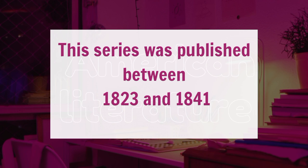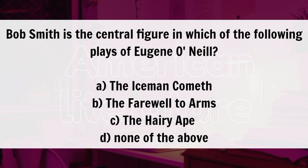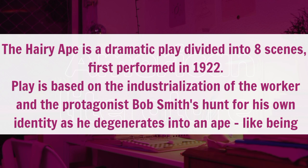Question 20: Bob Smith is the central figure in which of the following plays of Eugene O'Neill? Option A, The Iceman Cometh. B, The Farewell to Arms. C, The Hairy Ape. D, None of the above. The correct answer here is Option C, The Hairy Ape. The Hairy Ape is a dramatic play divided into eight scenes, first performed in 1922. The play is based on the industrialization of the worker and the protagonist Bob Smith's hunt for his own identity as he degenerates into an ape-like being.